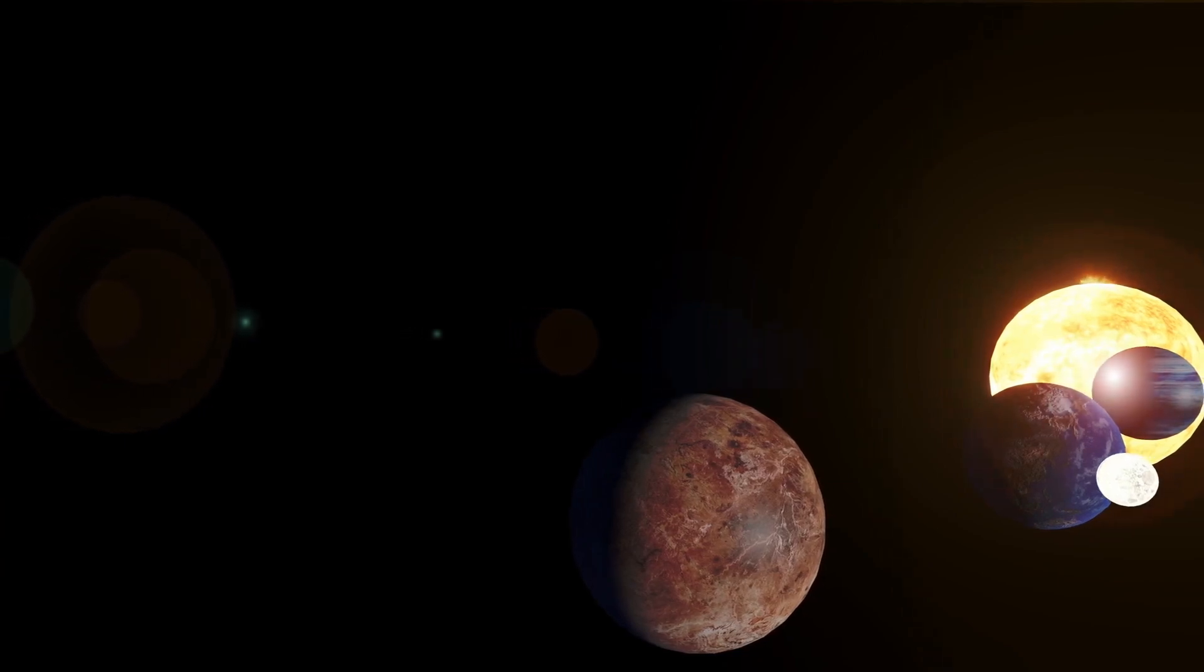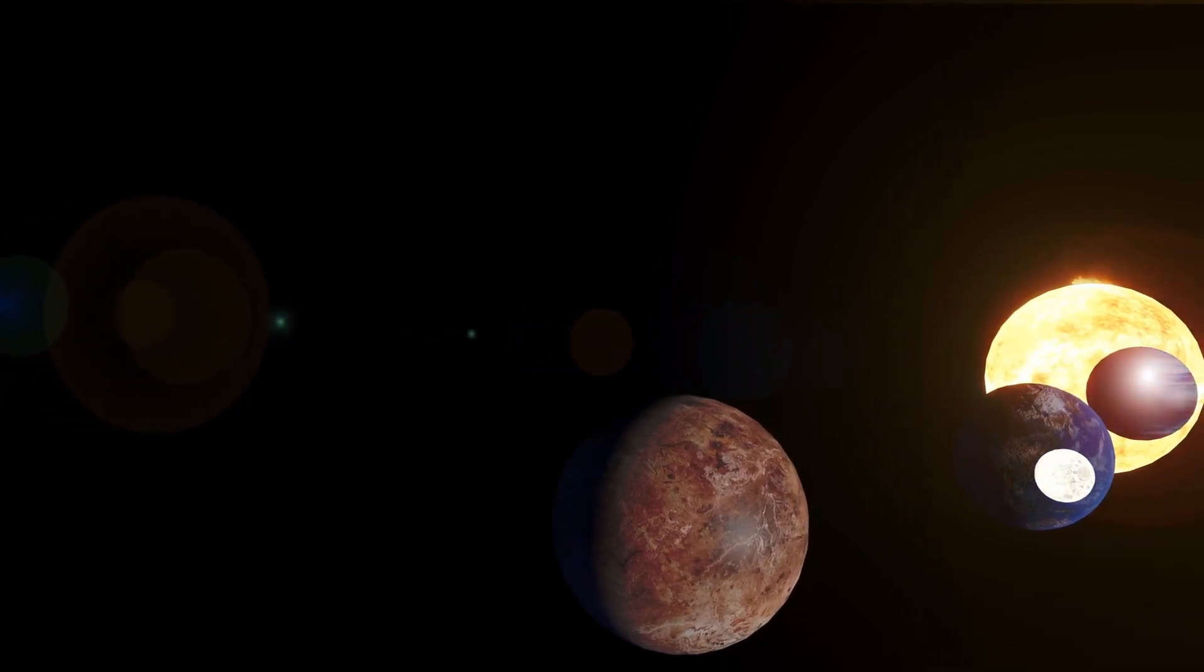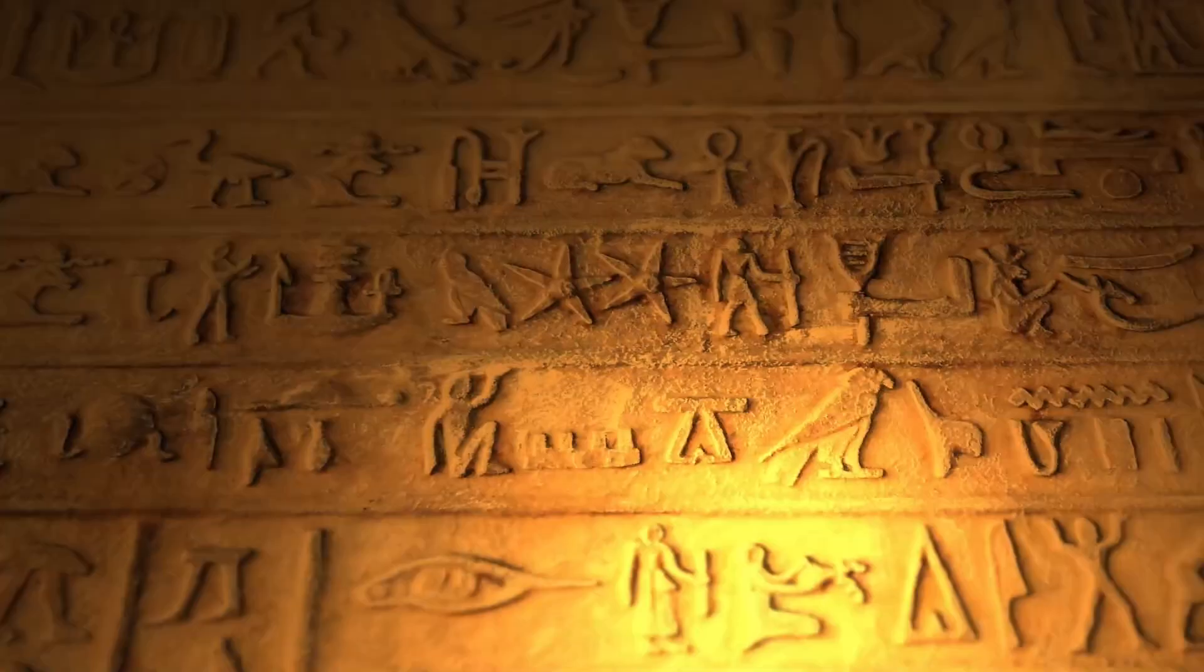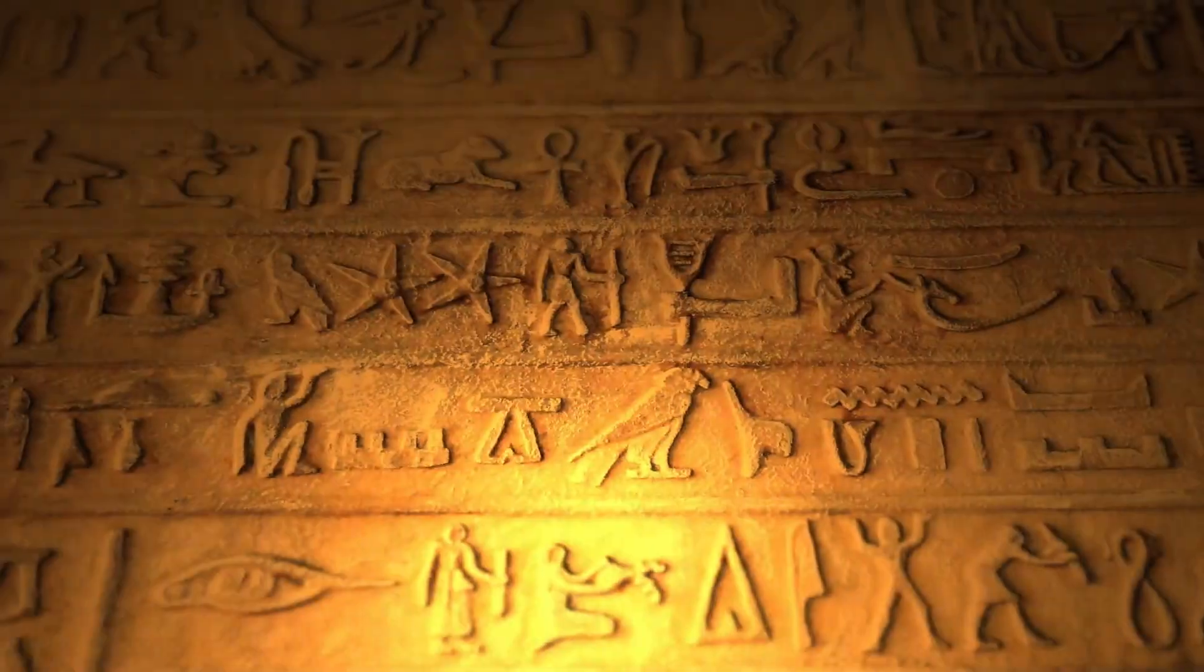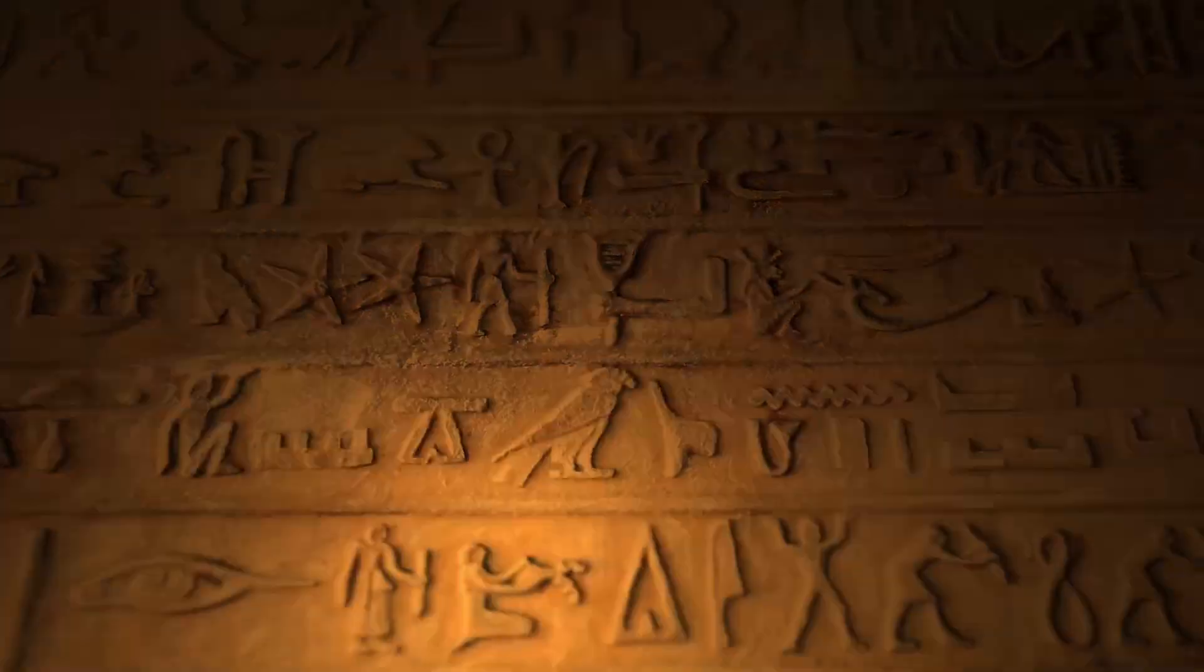Three days ago, when NASA's Deep Space Imaging Array finally achieved resolution detailed enough for surface mapping, they noticed something impossible. Atlas's surface wasn't uniformly dark. It had patterns. Geometric patterns. Hexagonal structures covering the entire surface like scales.